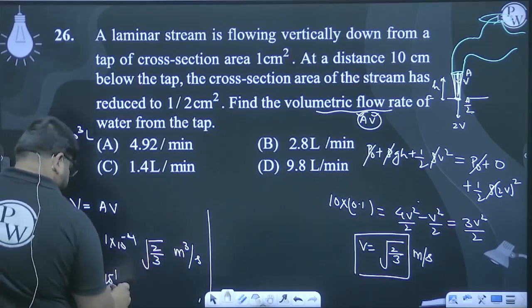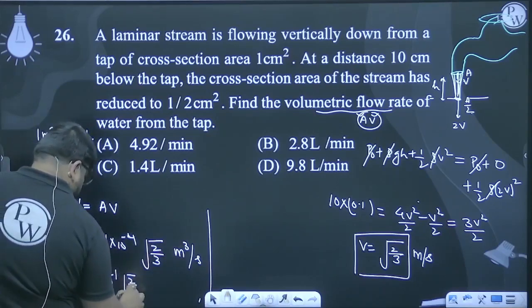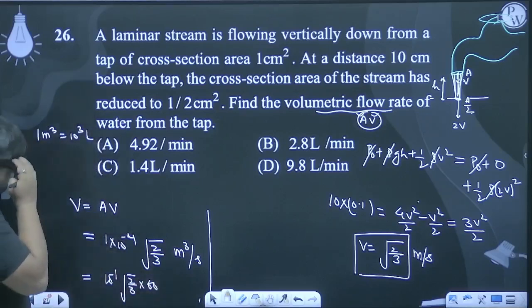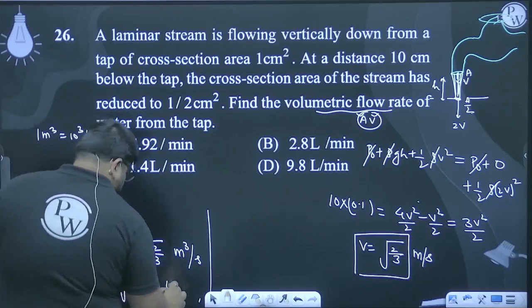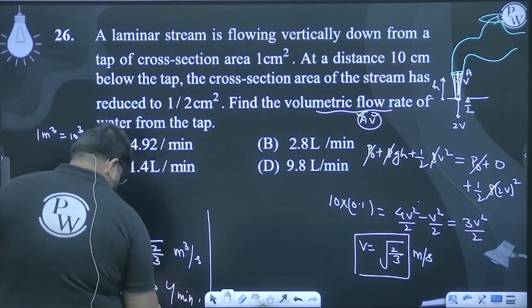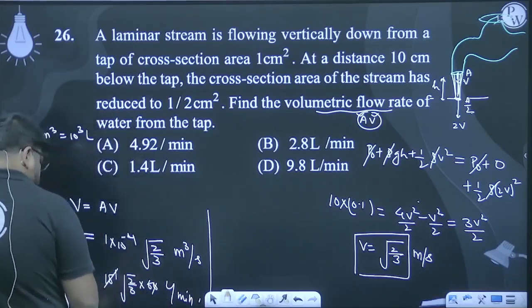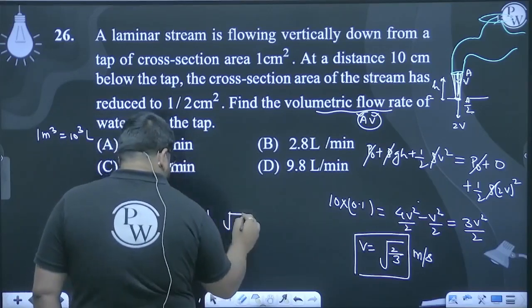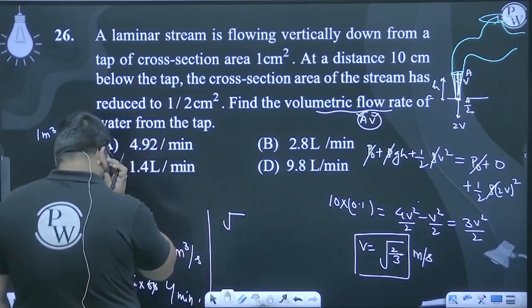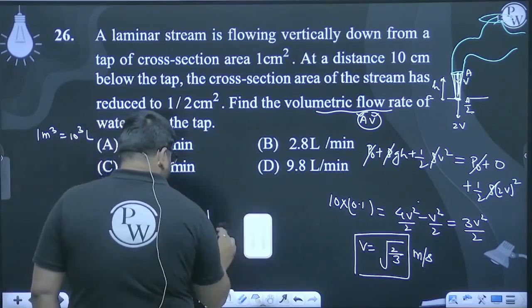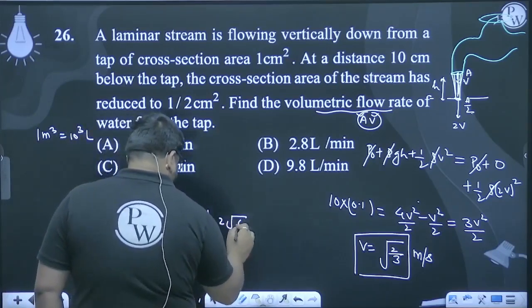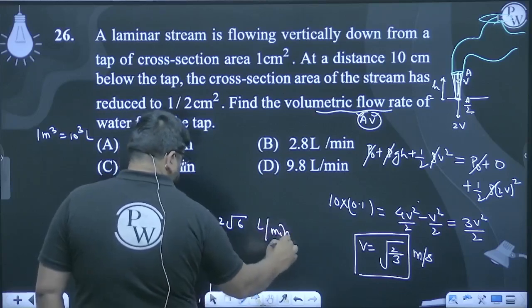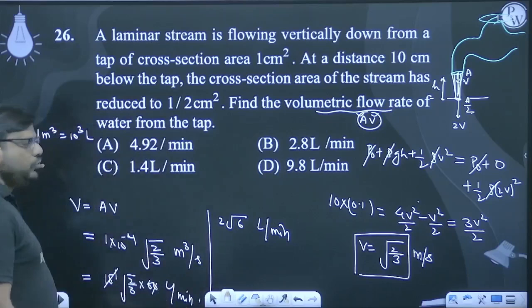Let me redo this quickly. This becomes 10⁻⁴⁻¹ - multiply by 1000, get √(2/3) into 60 liters per minute. One cancels out, so it becomes 6. It becomes 2√6 liters per minute. √6 is slightly larger than 2.